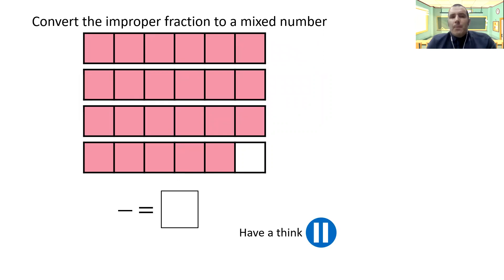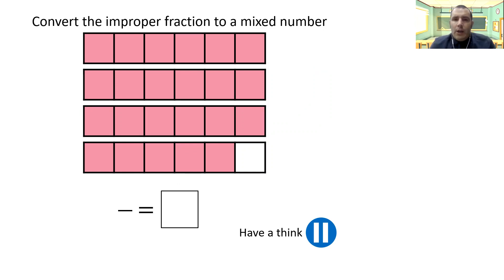Have a go at this one. Convert the improper fraction to a mixed number. What I want you to do: write down the improper fraction, and then using the bars, work it out as to what it should be for a mixed number.